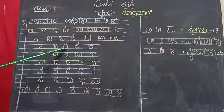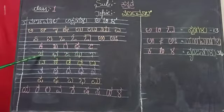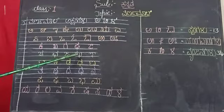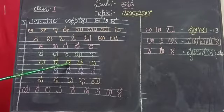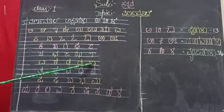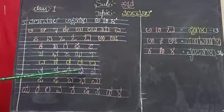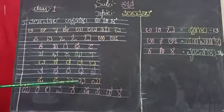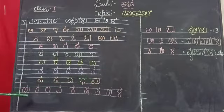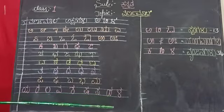K, K, G, G, Nya, Ch, Ch, J, J, Nya, T, T, D, D, N, Ta, Tha, Da, Dha, Na, Pa, Pha, Ba, Bha, Ma, Ya, Ra, La, Va, She, Sha, Sa, Ha, La.